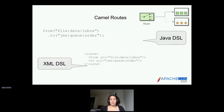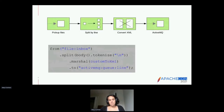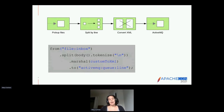Looking at what this actually looks like from a code perspective, you have simple examples both in Java and XML. In this specific integration, we take a file from the data folder called 'inbox' and send it to a JMS queue called 'order' — the same exact route written two different ways. Taking it further, we pick up a file, split it by line, change each line to XML, and send that XML to an ActiveMQ queue called 'line.'